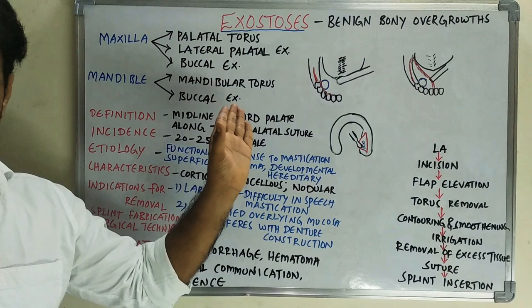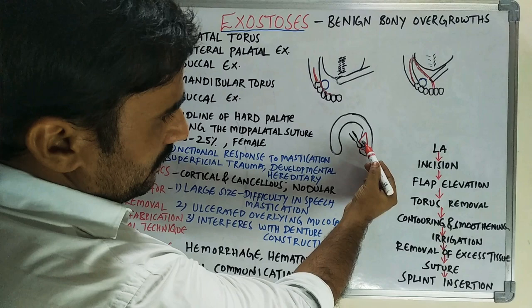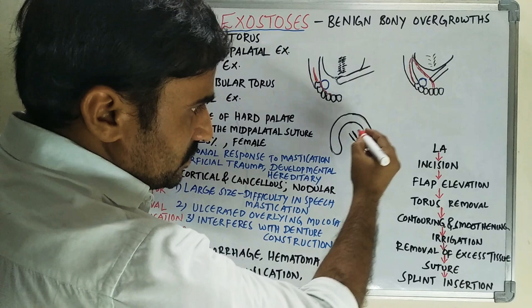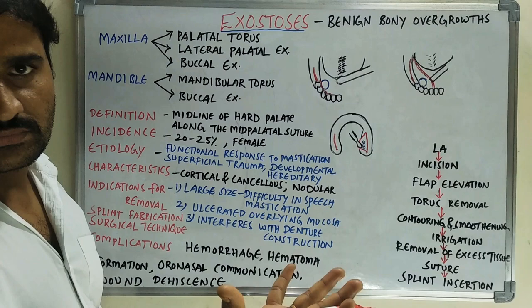Among exostoses, palatal torus and mandibular torus are the most important. For lateral palatal exostoses — visible as blue-colored prominences on the maxillary ridge in the diagram — make an incision along the crest of the edentulous region, elevate the flap, and use chisel and mallet or rotary bur to remove.